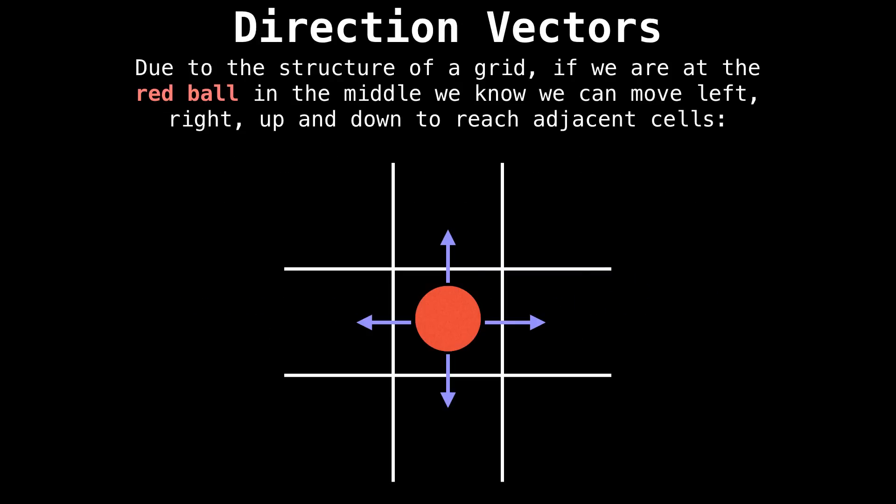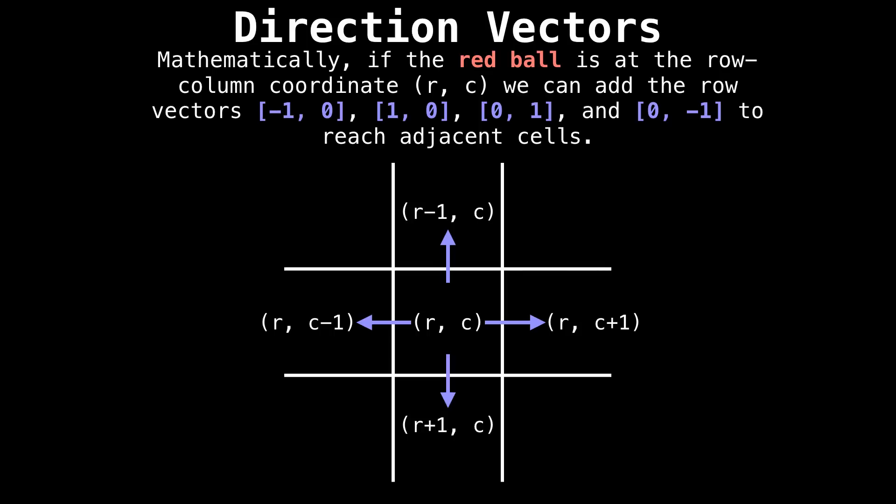Suppose we're the red ball in the middle, and we know we can move left, right, up, and down to reach adjacent cells. Well, mathematically, if we're the red ball at the row-column coordinate r, c, we can add the row vectors [-1, 0], [1, 0], [0, 1], and [0, -1] to reach all the adjacent cells.